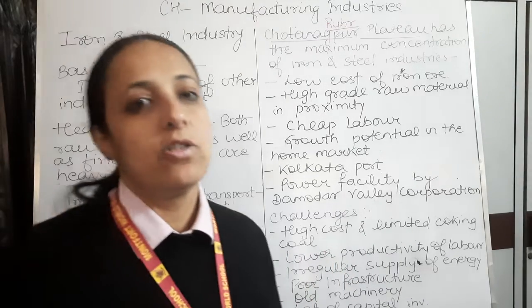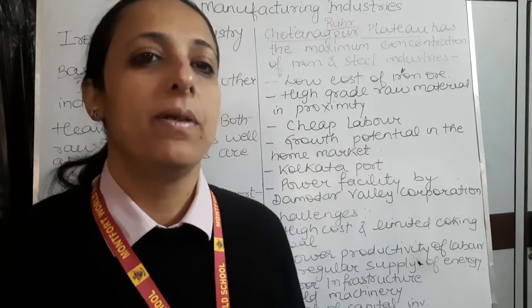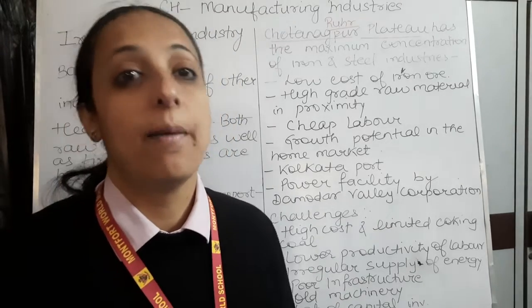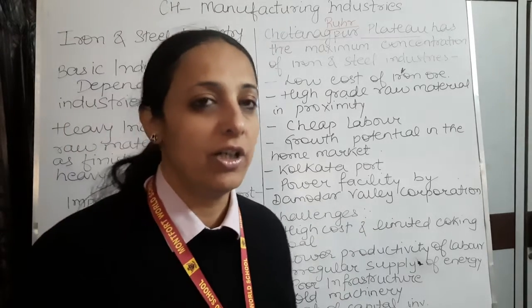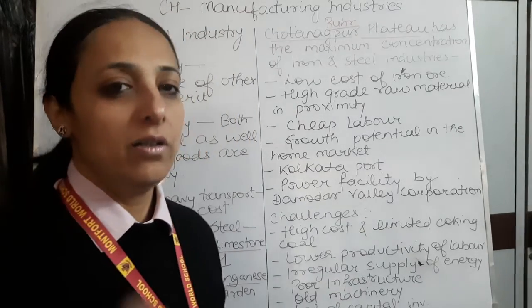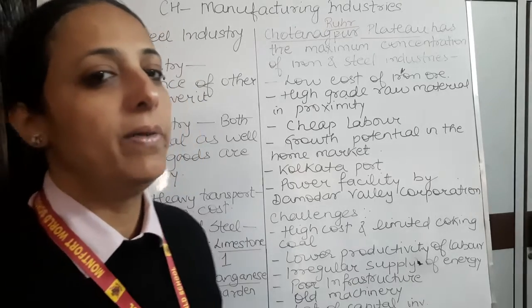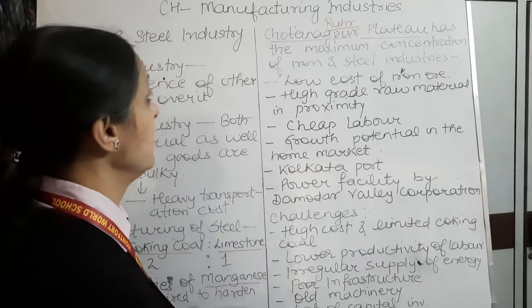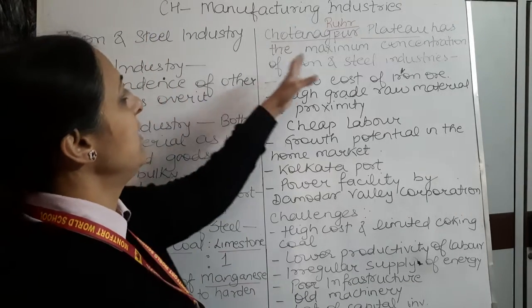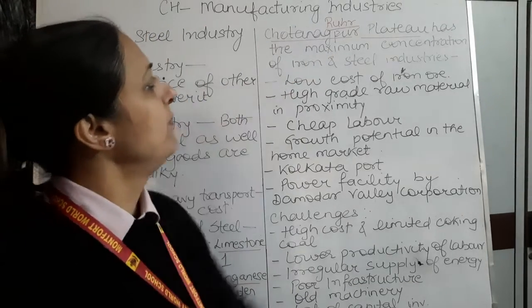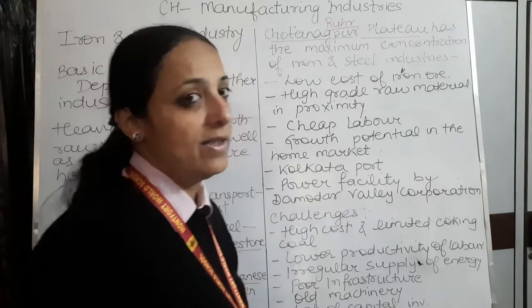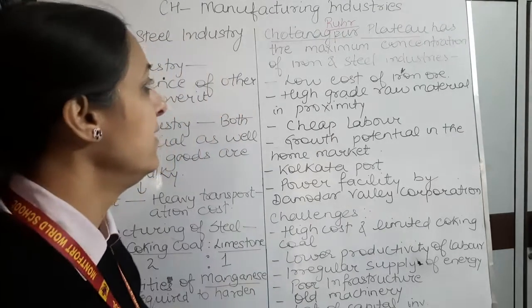Germany retaliated by printing paper currency recklessly, which led to hyperinflation — the worst economic blunder Germany committed. Similarly, the Chotanagpur Plateau is the Ruhr of India, with many iron and steel plants concentrated there.